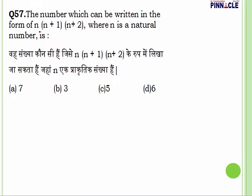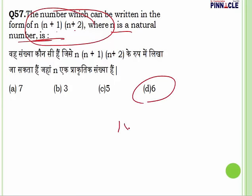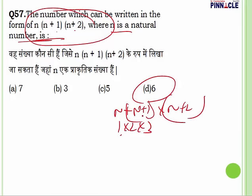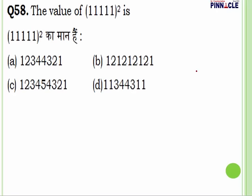Question number 57: which number can be written in the form n(n+1)(n+2) where n is a natural number? This is a very simple question. For example, 6 can be written as 1 times 2 times 3, where n equals 1, n+1 equals 2, n+2 equals 3. Answer is D — common observation, simple question.